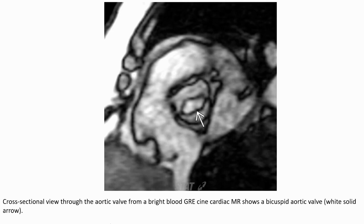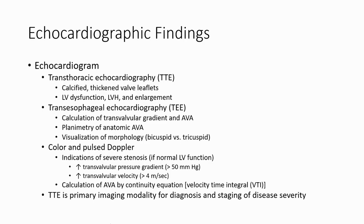Echocardiography findings: transthoracic echocardiography can show calcified thickened valve leaflets, left ventricular dysfunction, left ventricular hypertrophy, and enlarged chamber. Color and power Doppler are indicative of severe stenosis. If normal left ventricular function, calculation of aortic valve area by the continuity equation is possible. Transthoracic echocardiography is the primary imaging modality for diagnosis and staging of disease severity.